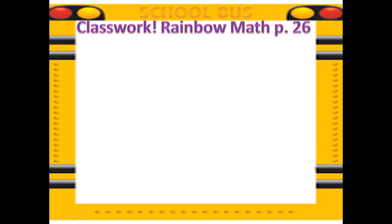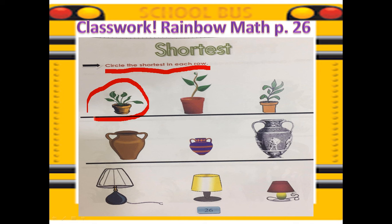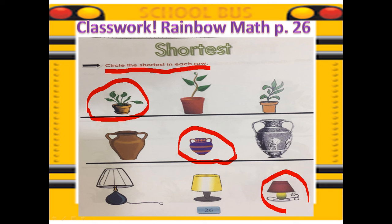Now, I want you to get your rainbow math book and open it on page 26. We will do our classwork for today. Are you all on this page? I will read to you the instruction: let's circle the shortest in each row. Which among these objects is the shortest in each row? Let's do this first one — which is the shortest? Well done. What about in this row — which is the shortest? Well done. And the last row — which can be the shortest? Well done, KGs.